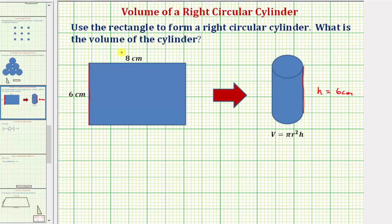Notice how this side of the rectangle, which measures eight centimeters, would actually be the distance around the circle, or the circumference of this circle.